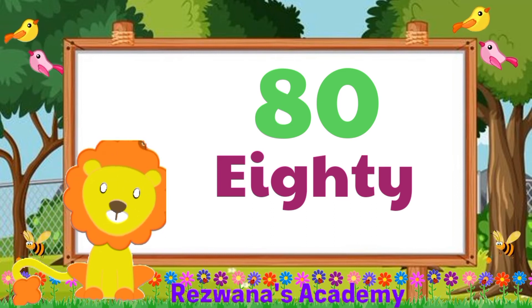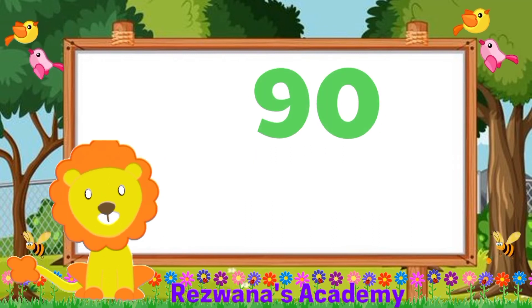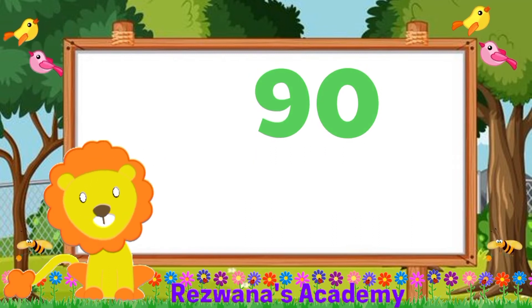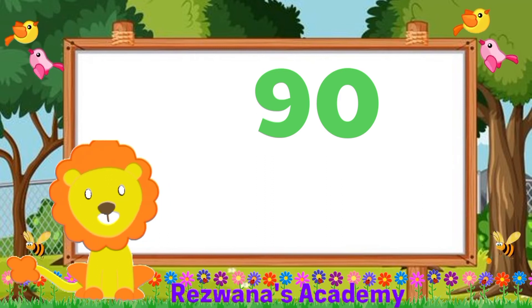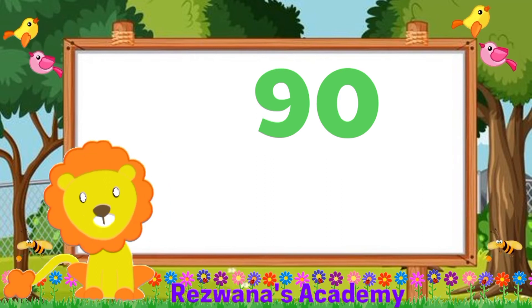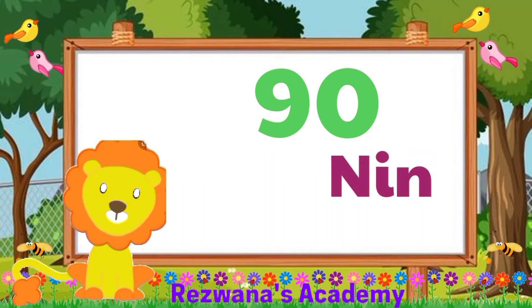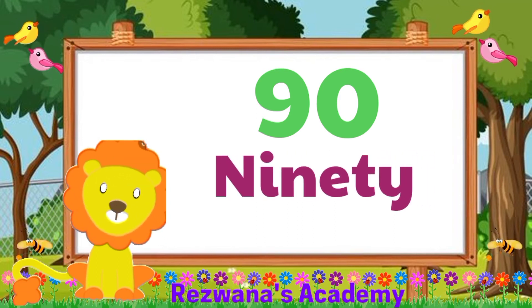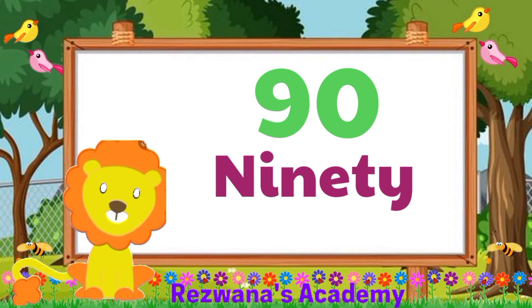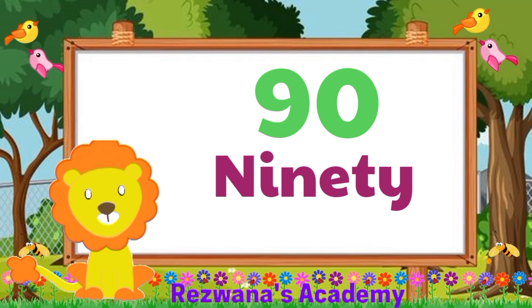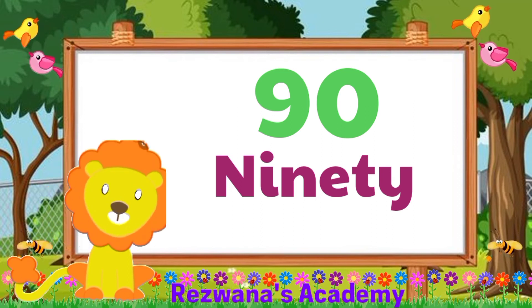Let's do the last one. 90. It is also made of 6 letters. So come on, let's spell them together: N, I, N, E, T, Y. 90.